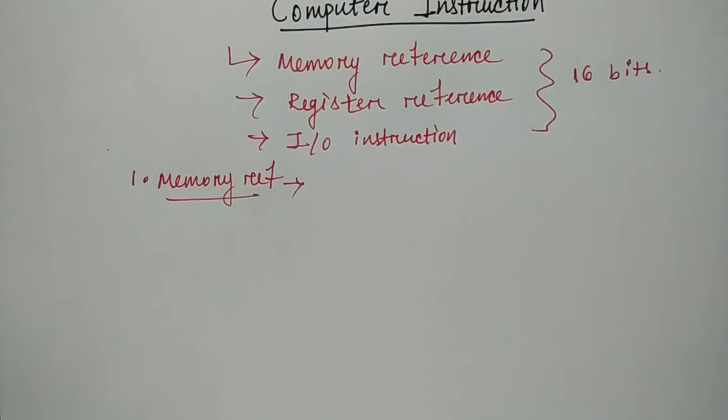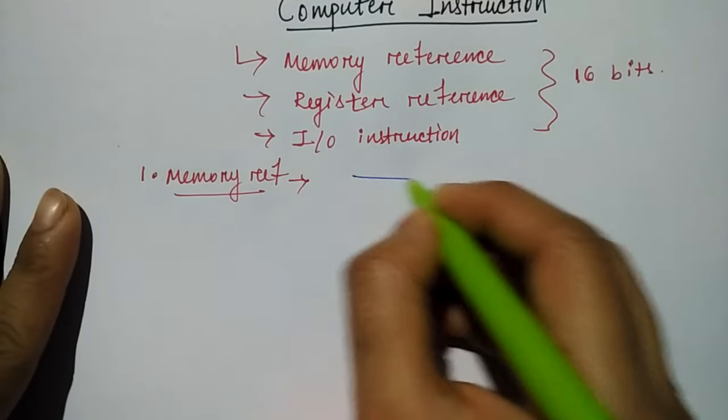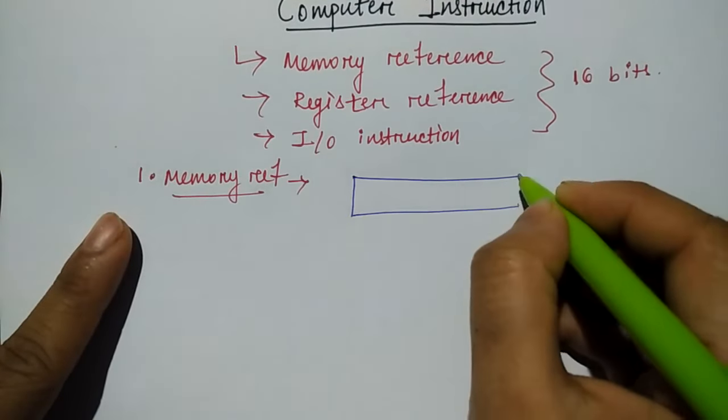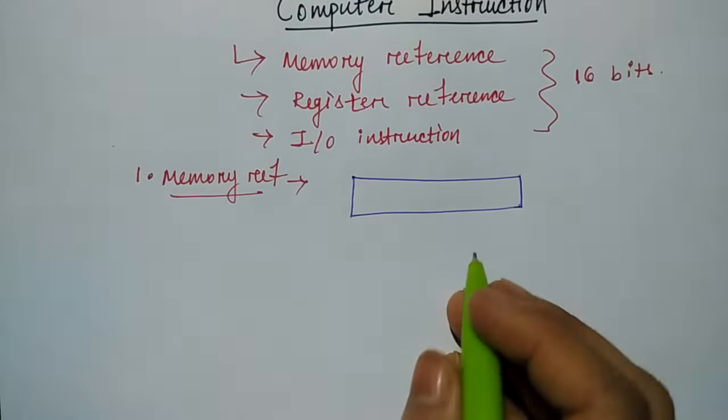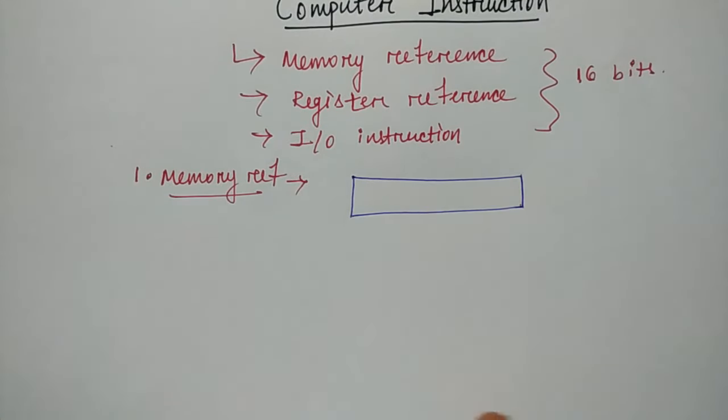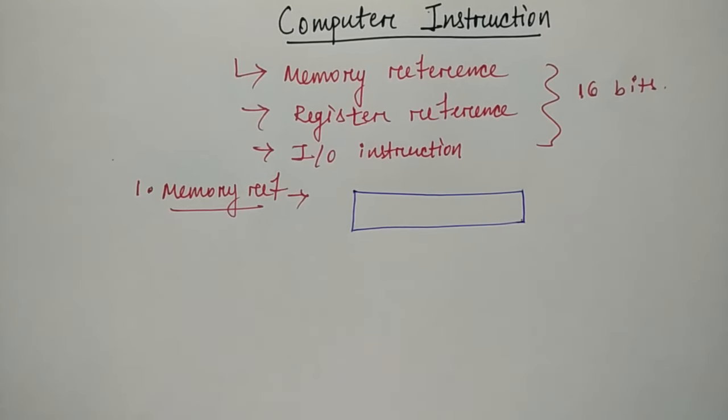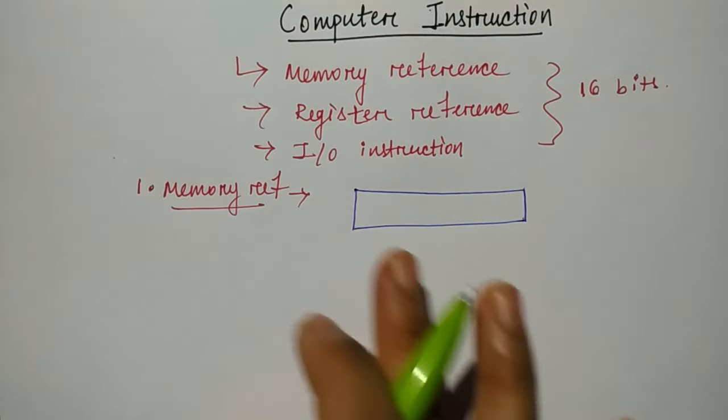Memory reference. So what happens in memory reference? Our instruction format is our instruction format. So I have told you that this is of two types. So what happens here? I have told you about direct and indirect address.